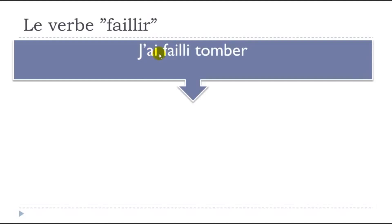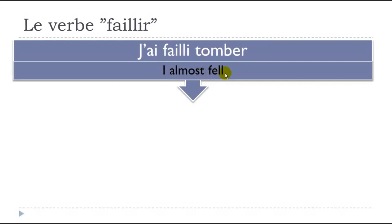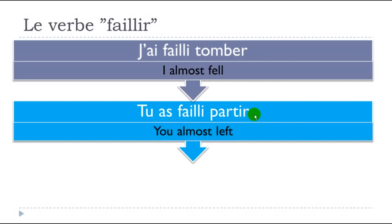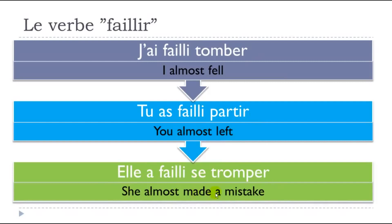A few more examples: j'ai failli tomber — I almost fell. Tu as failli partir — you almost left. Elle a failli se tromper — she almost made a mistake. It's quite simple: just put faillir at the passé composé form and then put a verb at the infinitive right after. J'ai failli tomber, tu as failli partir, elle a failli se tromper.